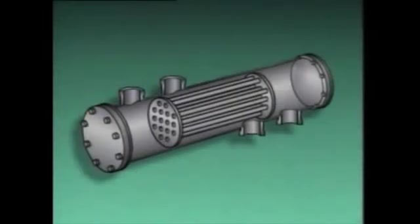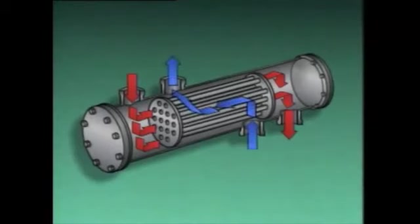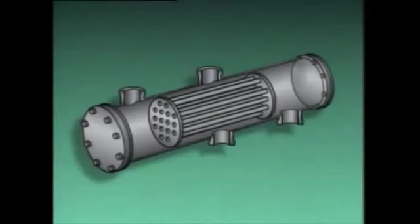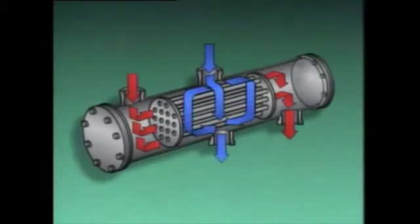In a counter flow heat exchanger, the fluids move through the shell and tubes in opposite directions. During operation, the tube side fluid enters this inlet, passes through the tubes, and leaves the unit through this outlet. On the other side of the heat exchanger, the shell side fluid enters this inlet, flows around the tubes, and leaves the unit through this outlet. With parallel flow heat exchangers, the temperature difference between the two fluids is greatest where the two fluids enter the heat exchanger, so the amount of heat transfer is greatest at this point. By the time the fluids are near the outlets, there is little or no temperature difference, so little or no heat is transferred.